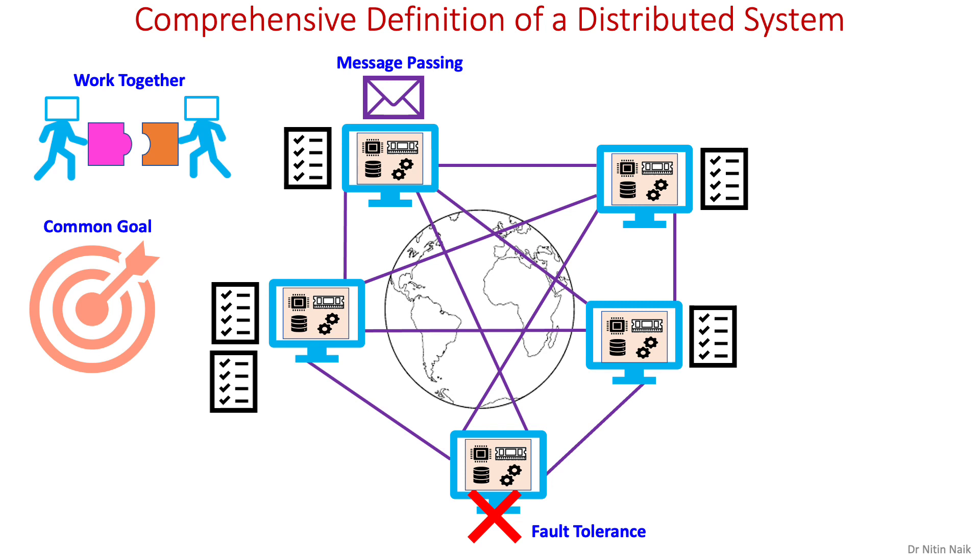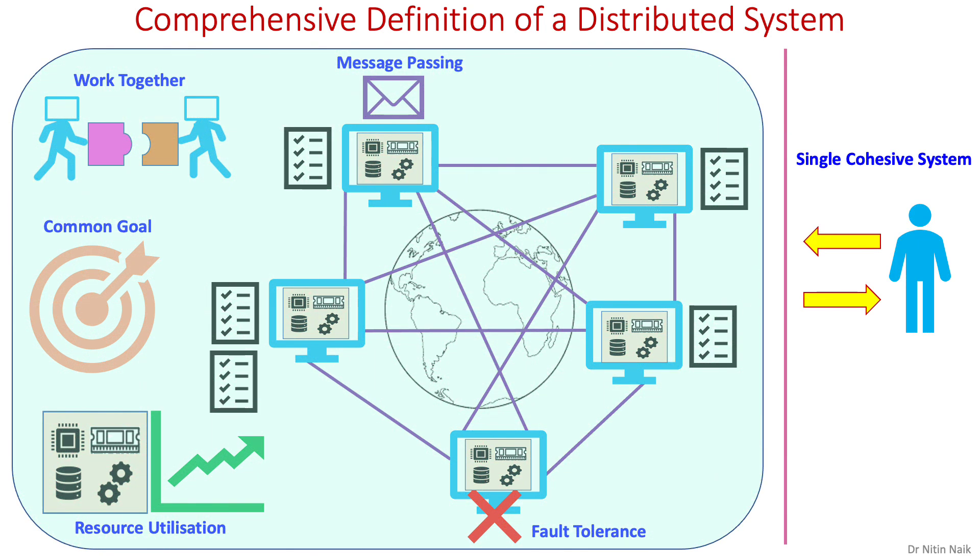Fourth, achieve common goals, meaning solving a common problem. Fifth, maximize resource utilization and performance by sharing resources and workload among the nodes. Sixth and final, appear as a single cohesive system, meaning it appears as a single system to its users.